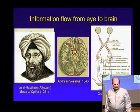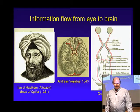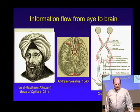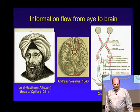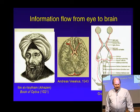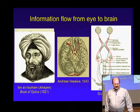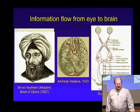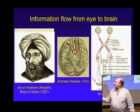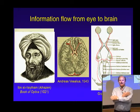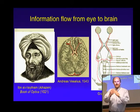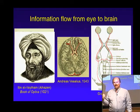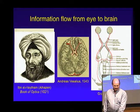The understanding that the eyes are sensors feeding signals into a fabulous processing network in the brain dates to systematic anatomical studies in the Renaissance period. The flow of information through the optical nervous system was described by Andreas Vesalius in 1543. By 1918 the information flow was very well understood, including the odd fact that signals from the left and right eyes cross in the brain. An injury to the right side of the brain will cause a deficit in the left visual field.